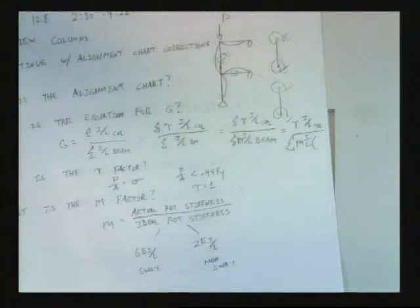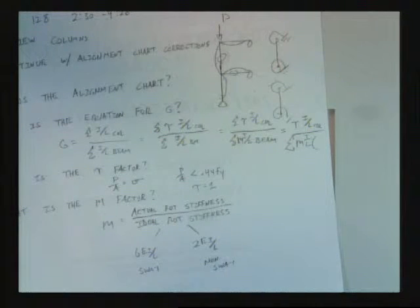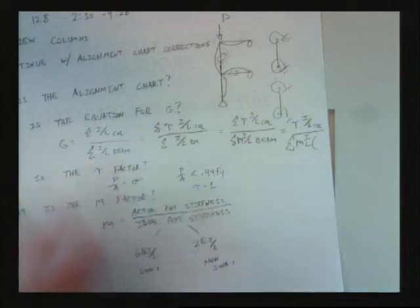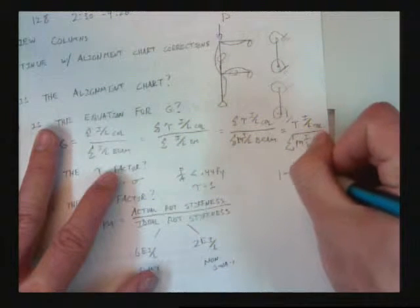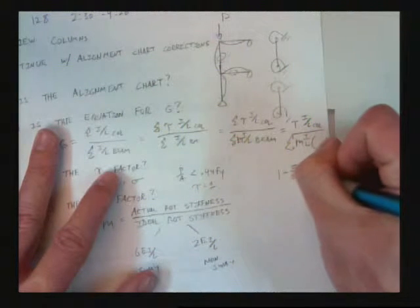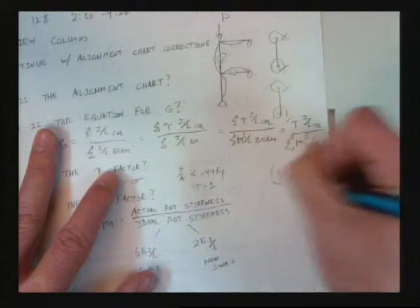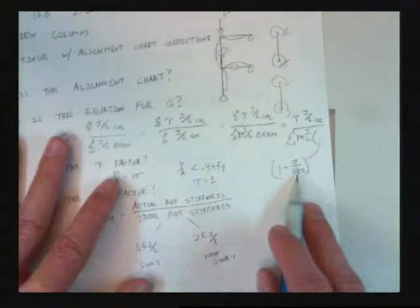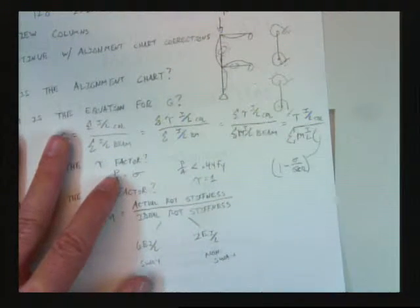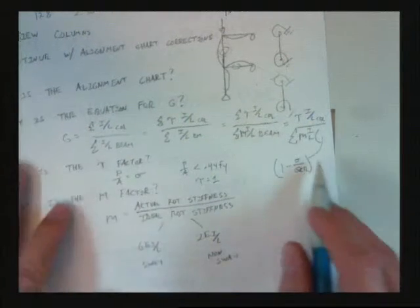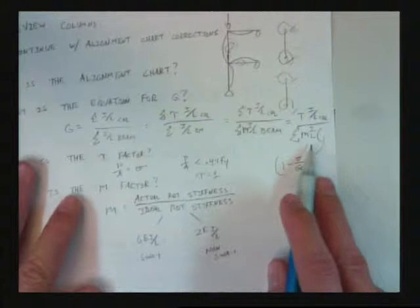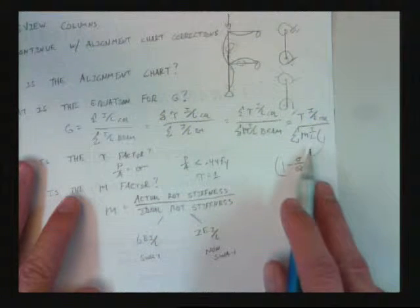And instead of including it in the numerator, we're not going to do that anymore. Now it's going to be included in the denominator. So you would, in a sense, have two restraining members for this failure. We have to take into account that in this restraining member, a.k.a. beam, there's axial load. And that axial load, if it's high enough, will reduce our stiffness. Are you with me?